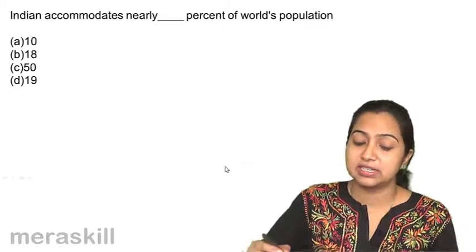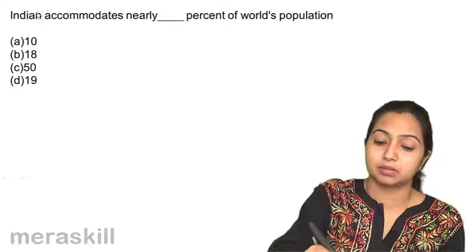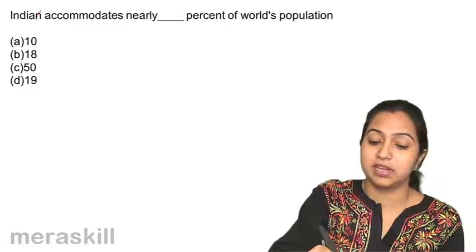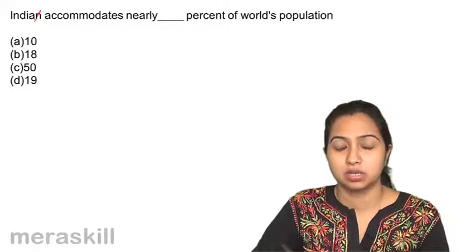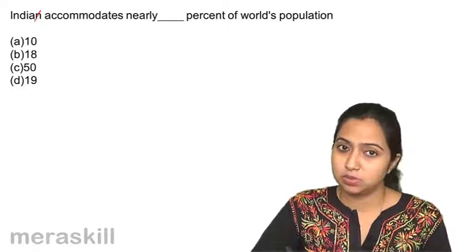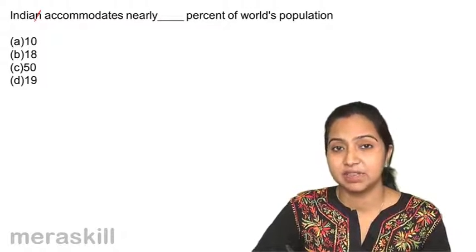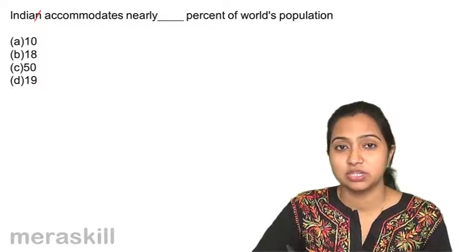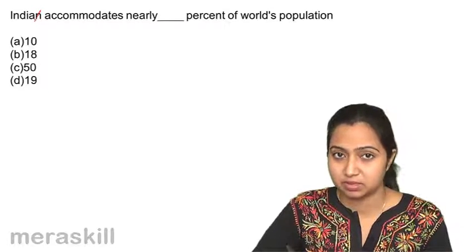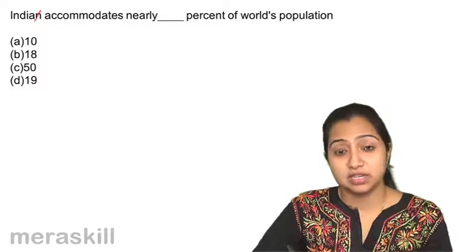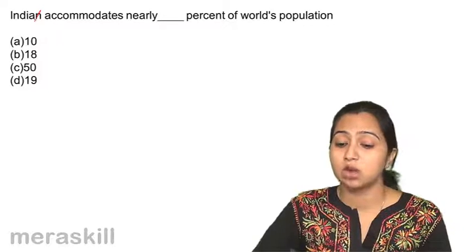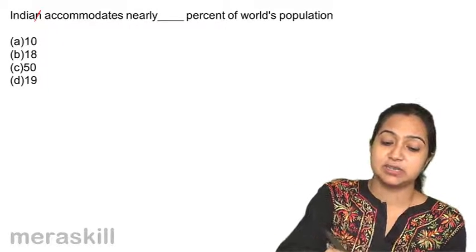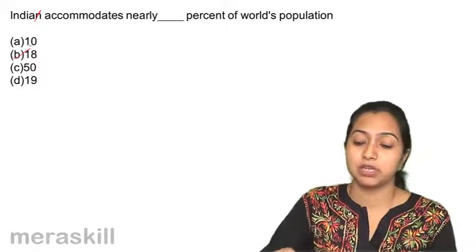India accommodates nearly dash percent of world's population. Remember what I told you, the world population is 7 billion and our population is 1.25 billion and we are nearly 18 percent of world's population. So India accommodates nearly 18 percent of the world's population.